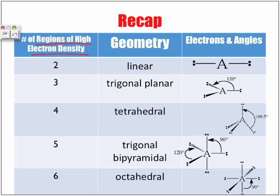So we have 2, 3, 4, 5, and 6. And pretty much the most stable shape for each one is linear, trigonal planar, tetrahedral, trigonal bipyramidal, and octahedral.